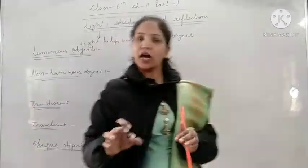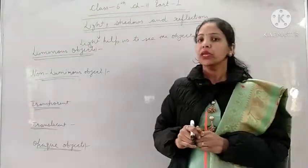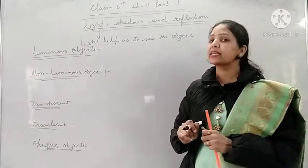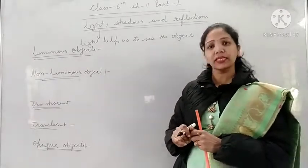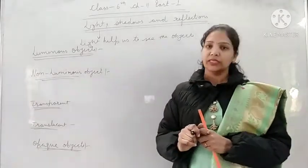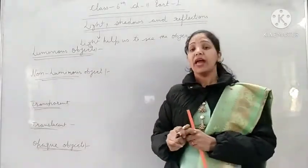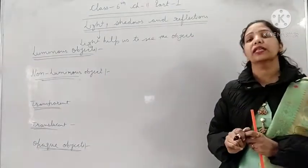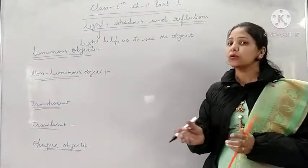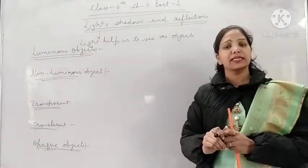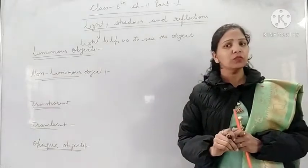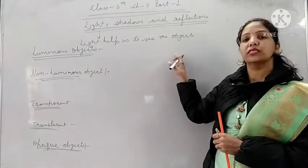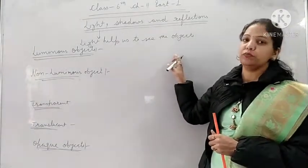If you enter a dark room, you are not able to see the objects that are present in the room. And when you switch on the light, after that you are able to see the objects that are present in the room. So light helps us to see the objects.